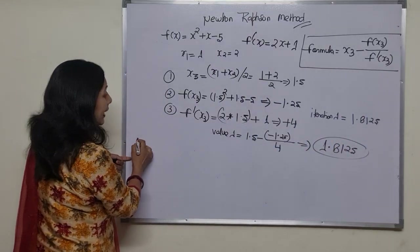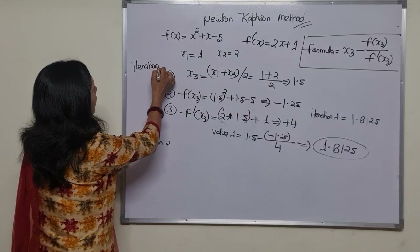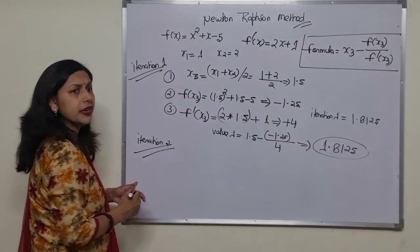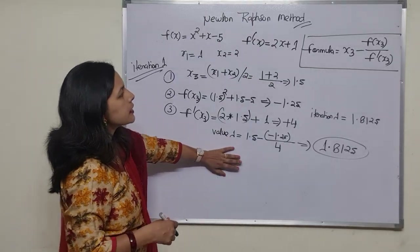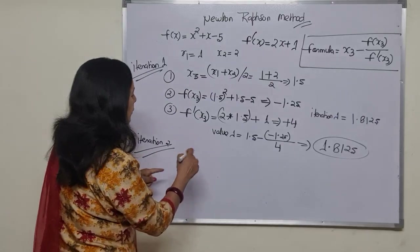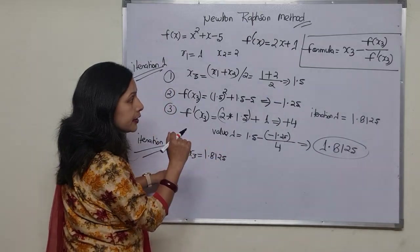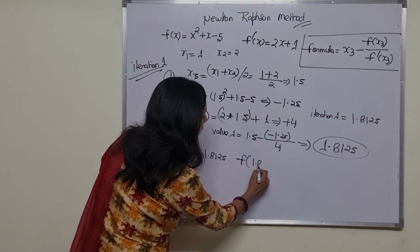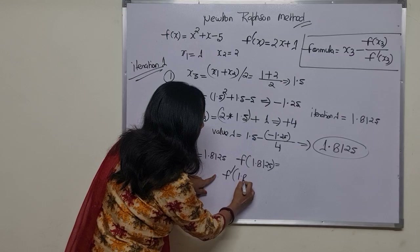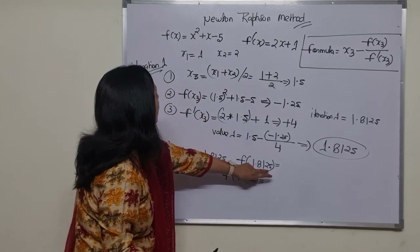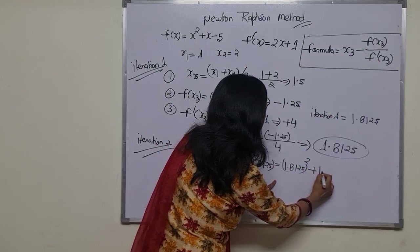Now we find the value for iteration number 2. This time x3 is 1.8125. We need f(1.8125) and f'(1.8125). The equation for f(x) is 1.8125 squared plus 1.8125 minus 5.